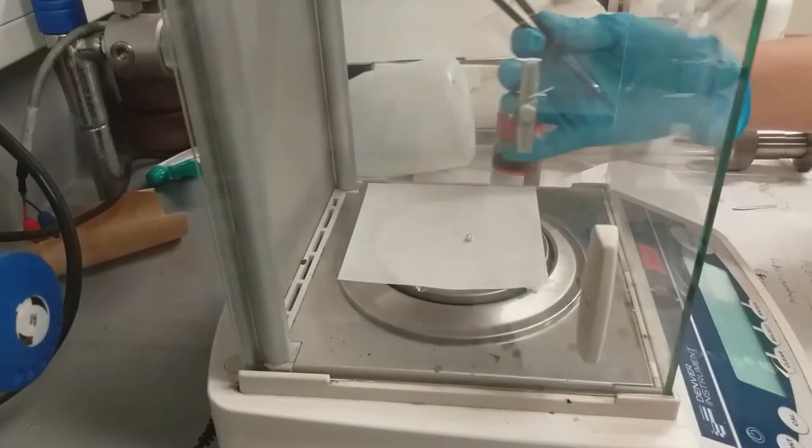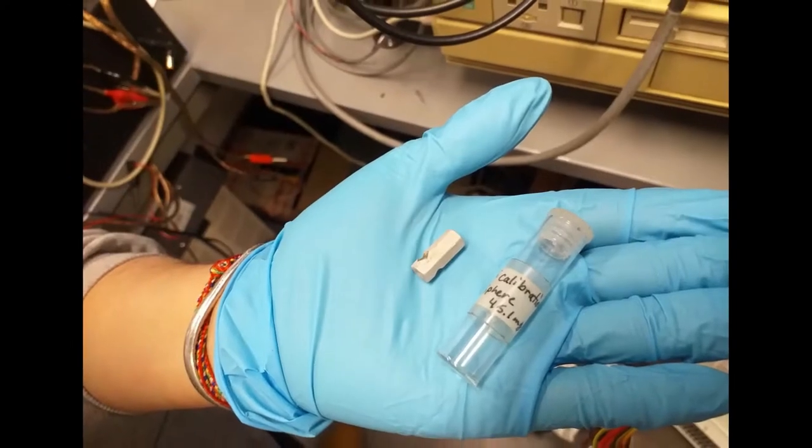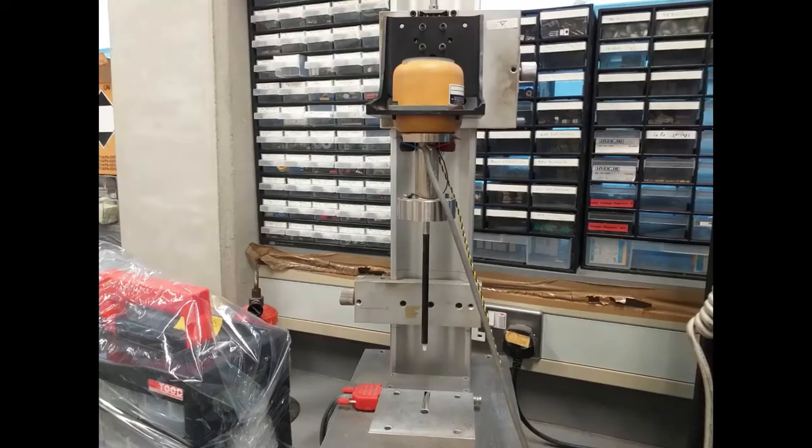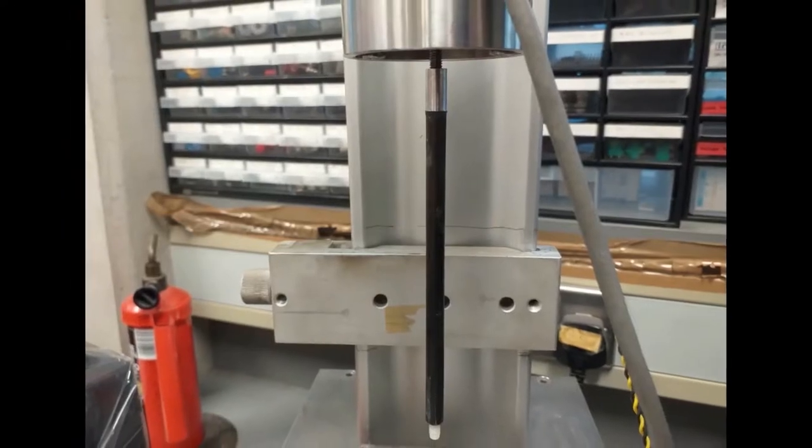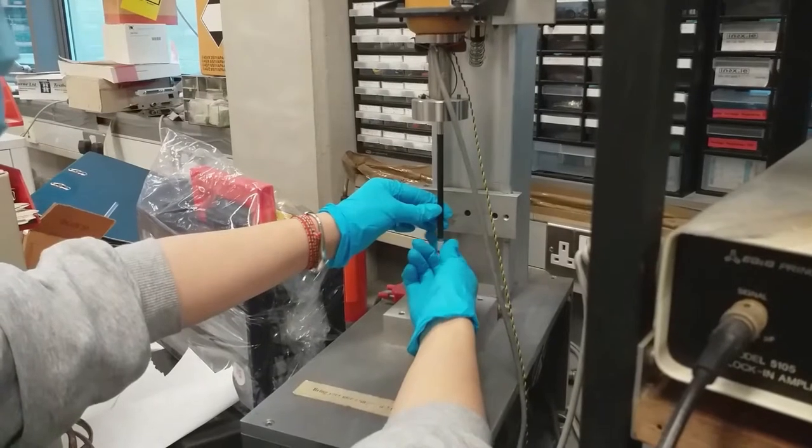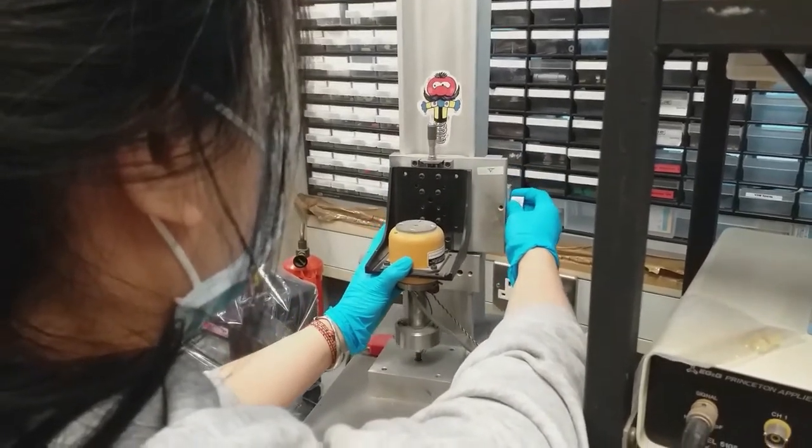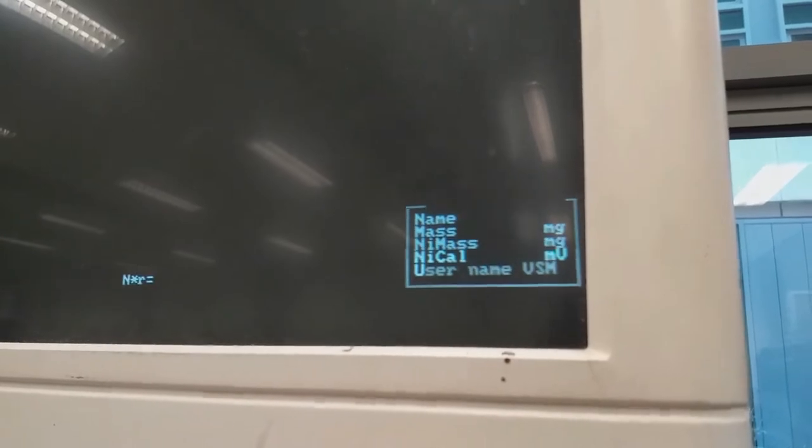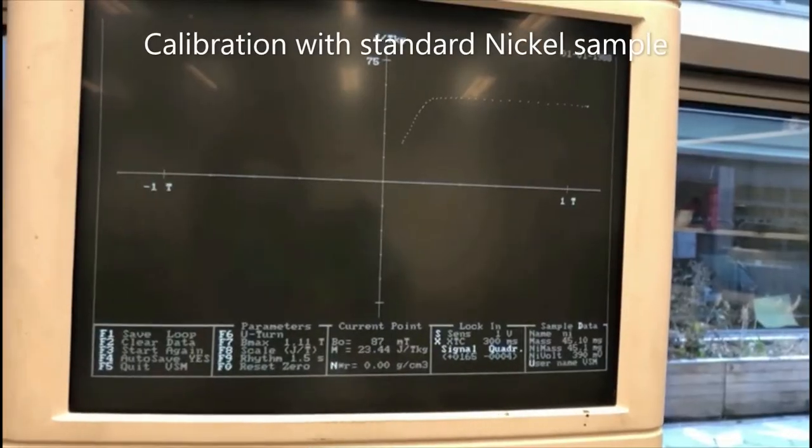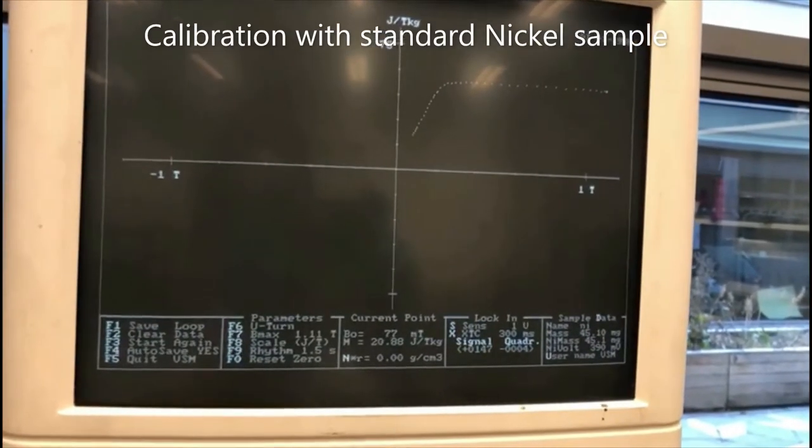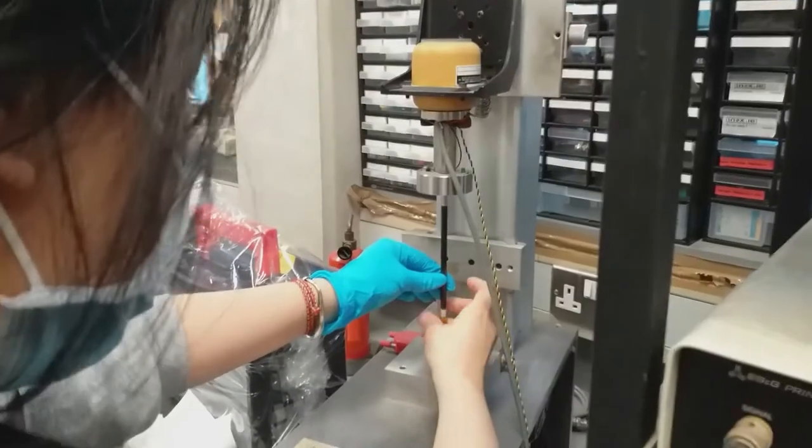Then we obtain a small ball to put on the sample holder. In order to obtain reliable data, we need to load the standard sample nickel to do the calibration. This is the vibration rod. The sample holder will mount on it. Then we move the rod to the center of the magnetic field gently.